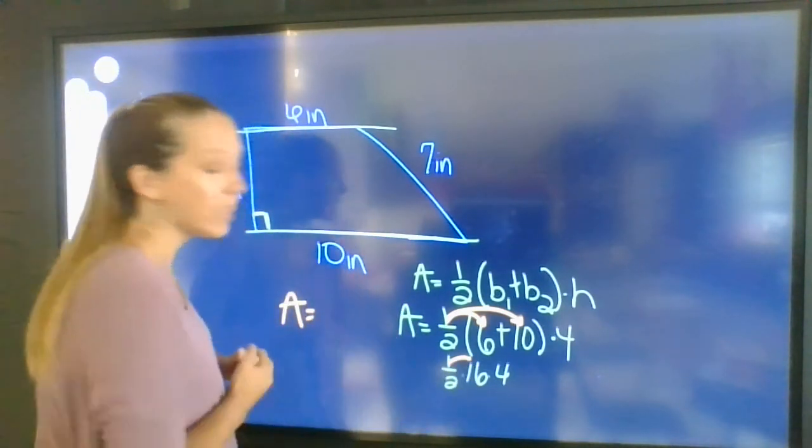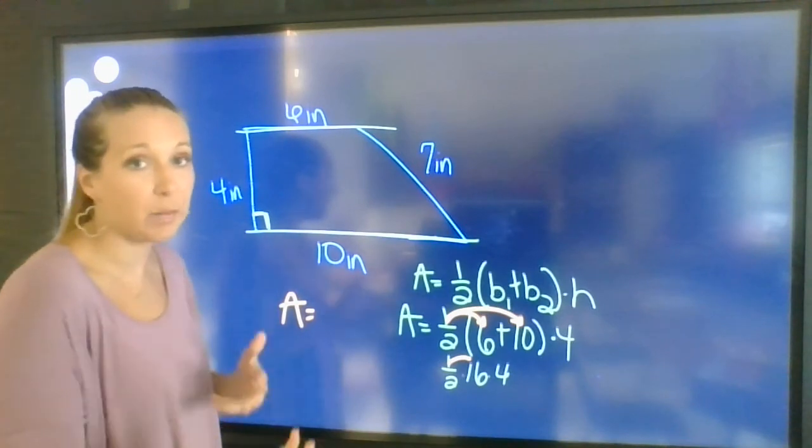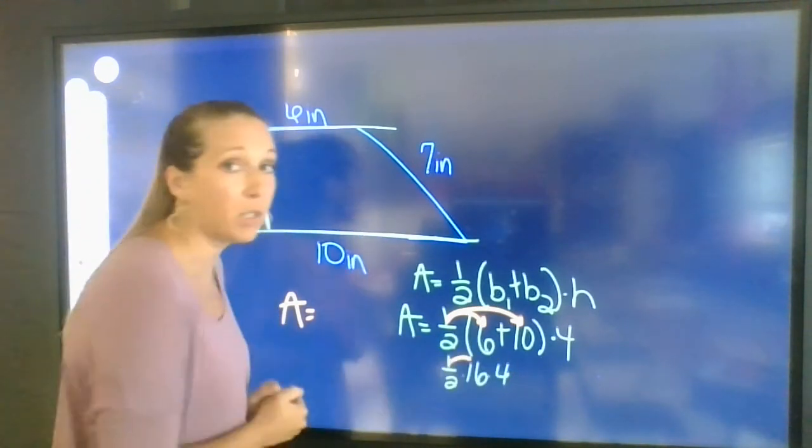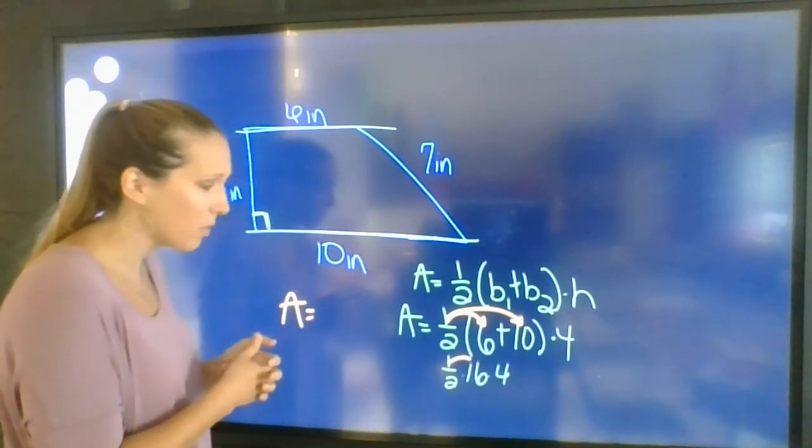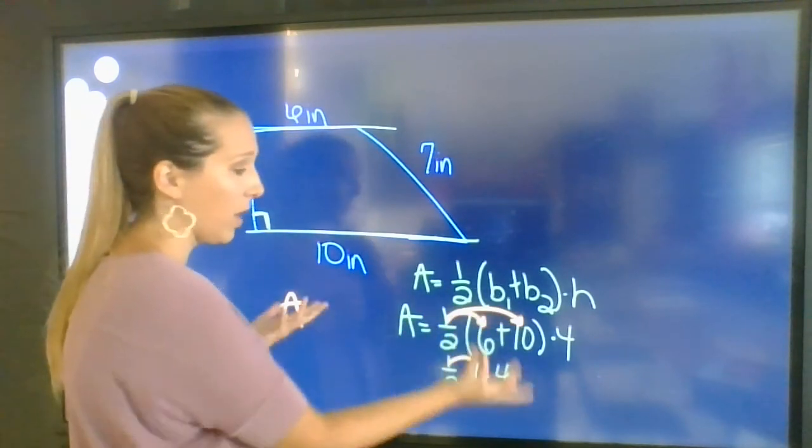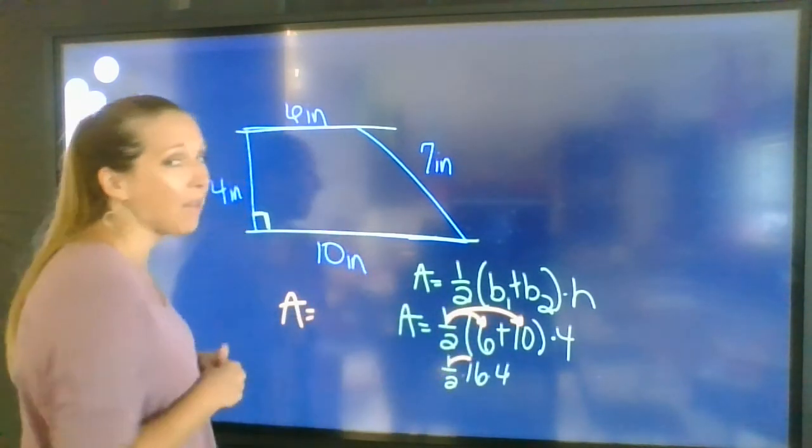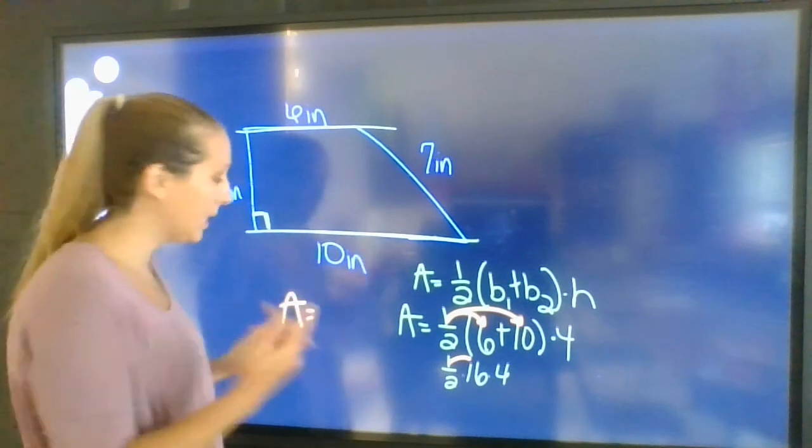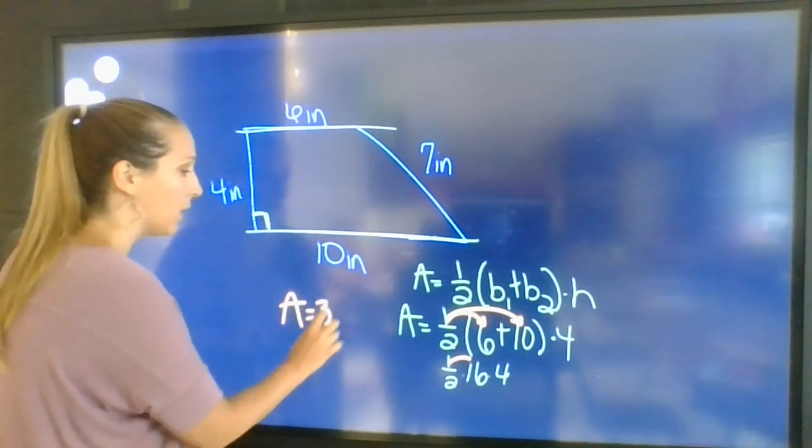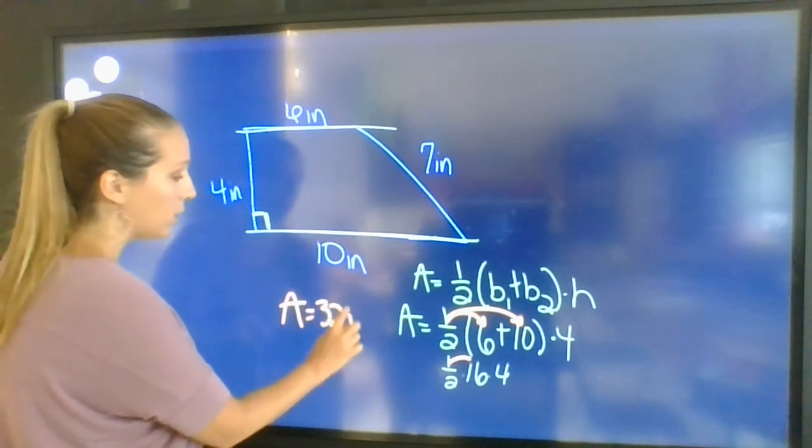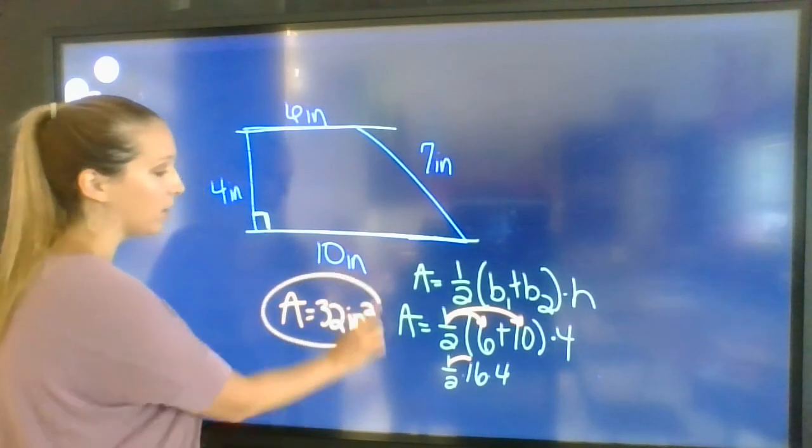So half of 16 is going to be 8, and then you can do 8 times 4. Half of 4 is going to be 2, and then 2 times 16. Or you could do it the other way, that's fine too. So I take half of 4, I get 2. 16 times 2, that's going to give us 32 inches squared. So there's our area.